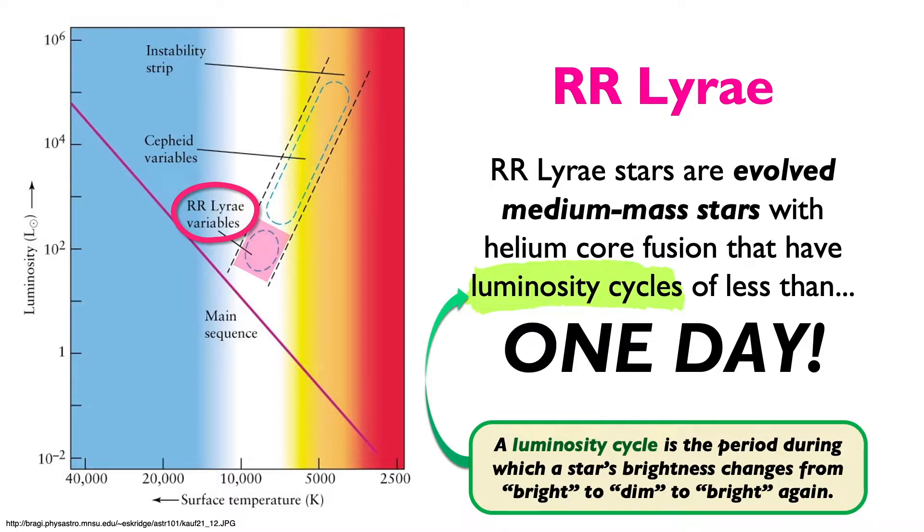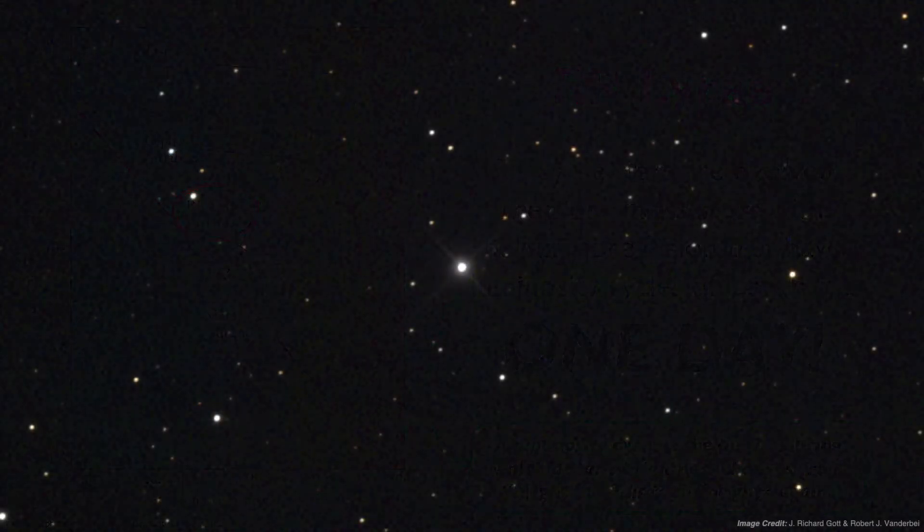But before we dive deeper, let's take a quick detour and learn about the history of the name of these stars. The term RR Lyrae now refers to stars that fit the description of an RR Lyrae variable star, but the very particular title given to these stars, RR Lyrae, comes from the first star of this kind to be detected.